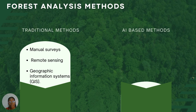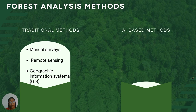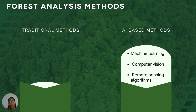We have two basic forest analysis methods: traditional methods and AI-based methods. Our traditional methods — manual field surveys, remote sensing, and GIS — are conventional methods that were good analytical approaches, but have proven to be time-consuming, give limited spatial coverage, and involve subjective interpretation of data. Our AI-based methods, which include machine learning, computer vision, and remote sensing algorithms, are more efficient, reliable, and accurate.